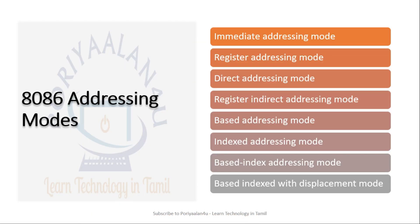Addressing modes: In 8085, the addressing modes are Immediate Addressing Mode, Direct Addressing Mode, Register Addressing Mode, and Indirect Addressing Mode. In 8086, additional modes include Base Addressing Mode, Index Addressing Mode, Base Index Addressing Mode, and Base Index with Displacement — providing additional flexibility for addressing.